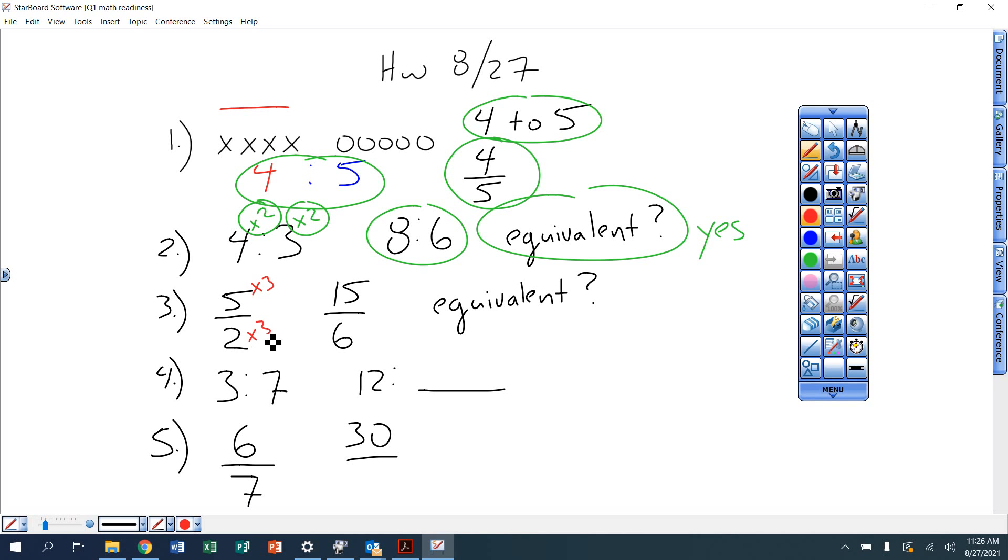And again, like I said, if I would have multiplied the top number by 5 or 3 and maybe multiplied the bottom number by something different like 4 and gotten 15 over 8, that would have been no.